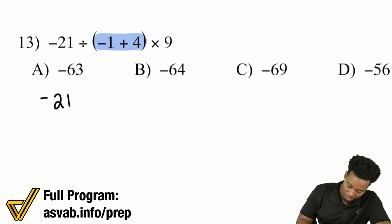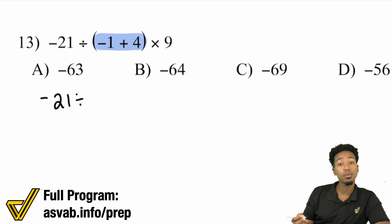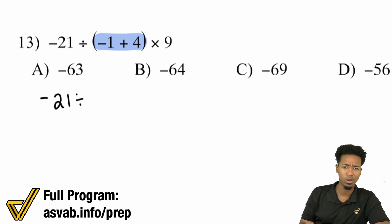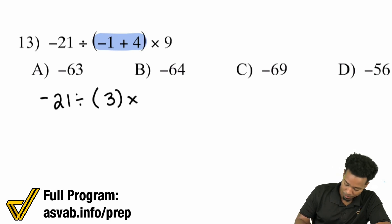Negative 21 divided by — negative one plus four is the same as four minus one, which is three. Then we multiply the rest by nine.